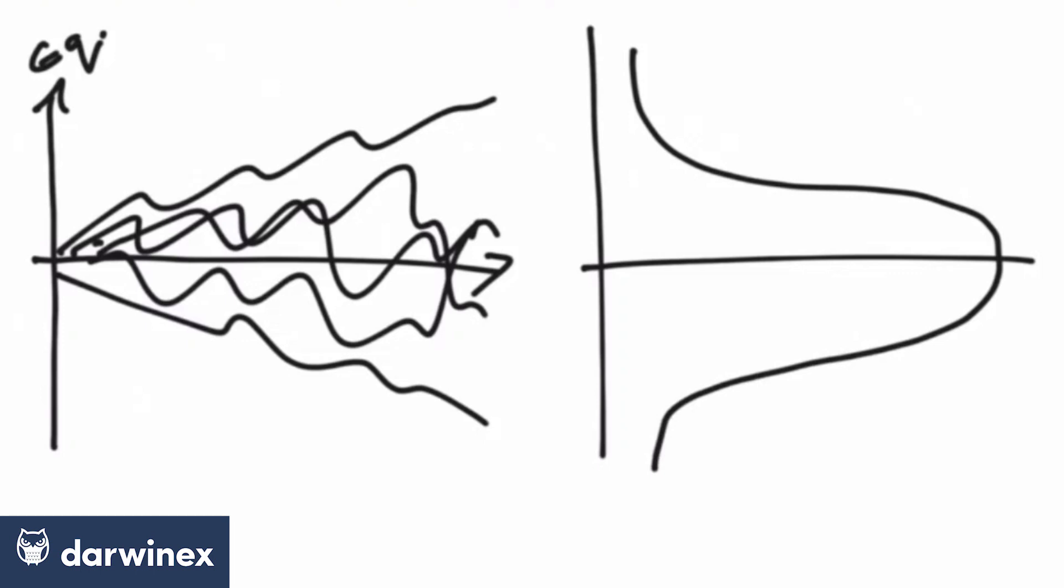something like this, the systems that effectively break even—you'll have many more of those, which is represented by this peak on the distribution curve, whereas the systems that do